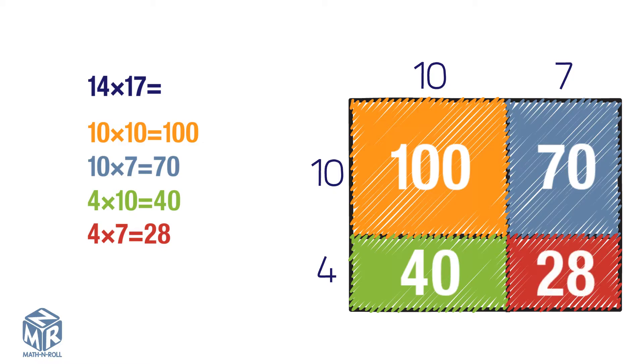Find the sum of the products. 100 plus 70 plus 40 plus 28 equals 238. So 14 times 17 equals 238.